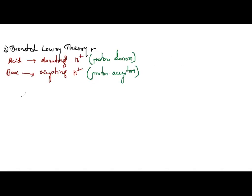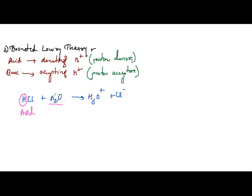Another example: NH₃ + H₂O → NH₄⁺ + OH⁻. NH₃ is accepting a proton, so it is a base (proton acceptor) according to Bronsted-Lowry theory. Water is giving the H⁺ ion, so water acts as an acid here. This shows that water can act as both acid and base depending on context.